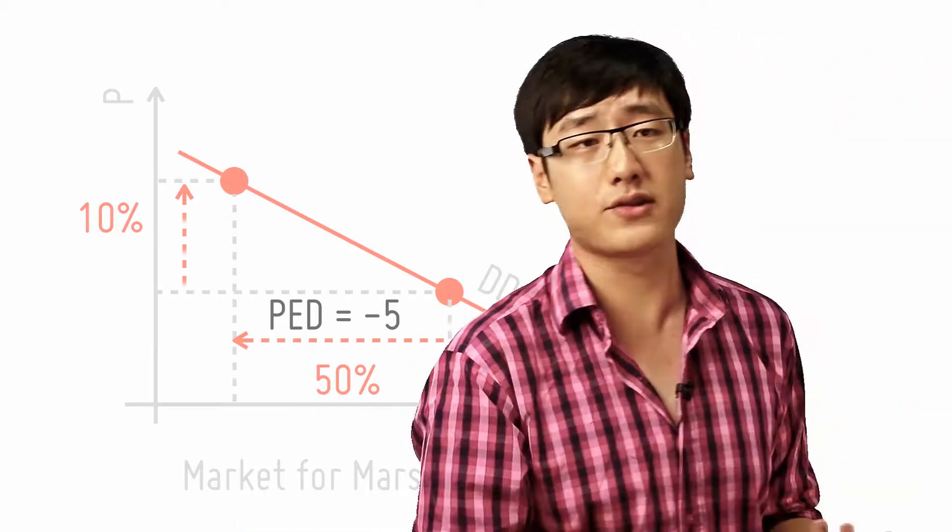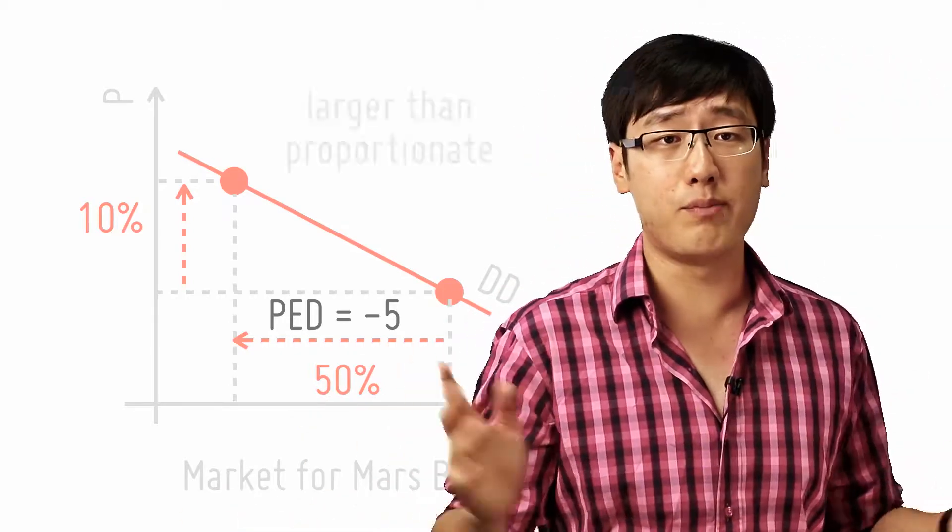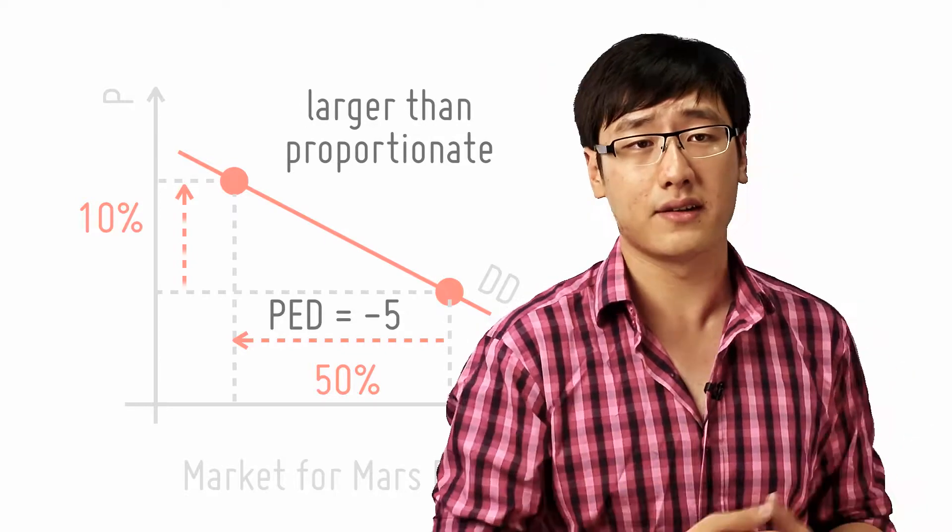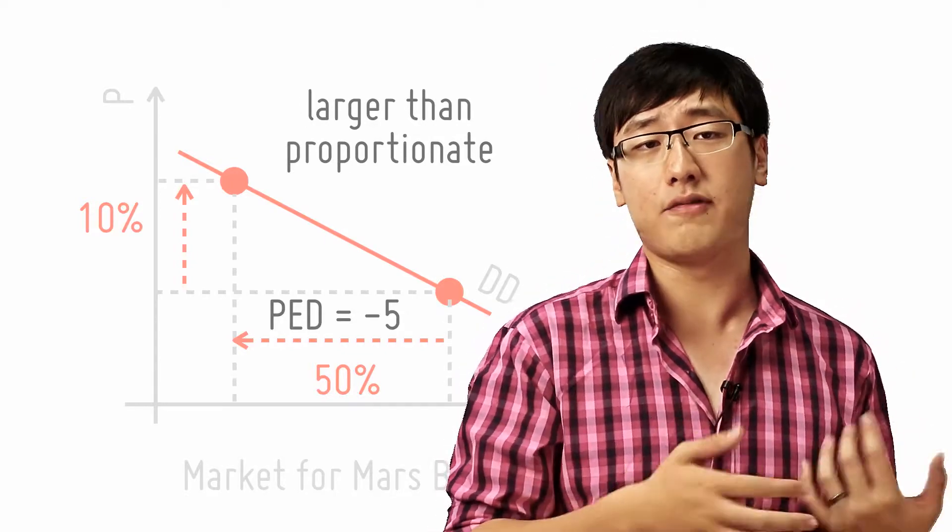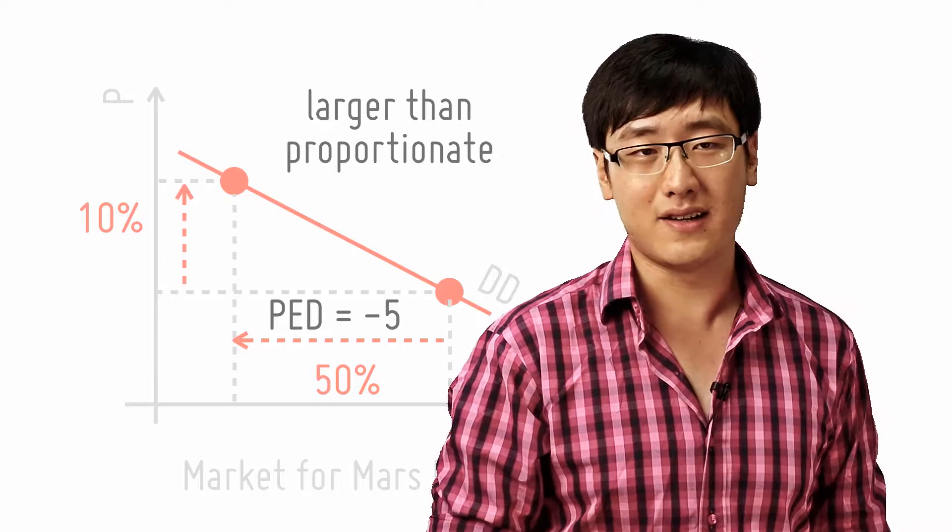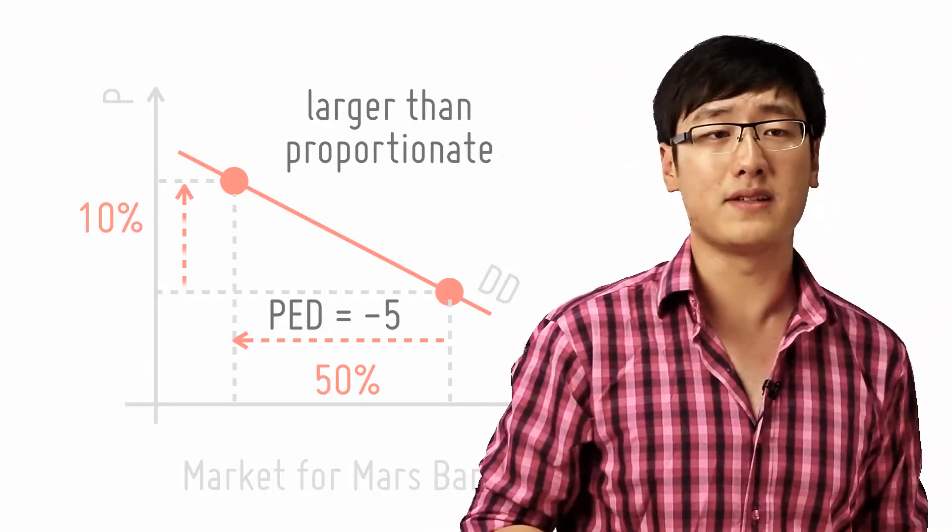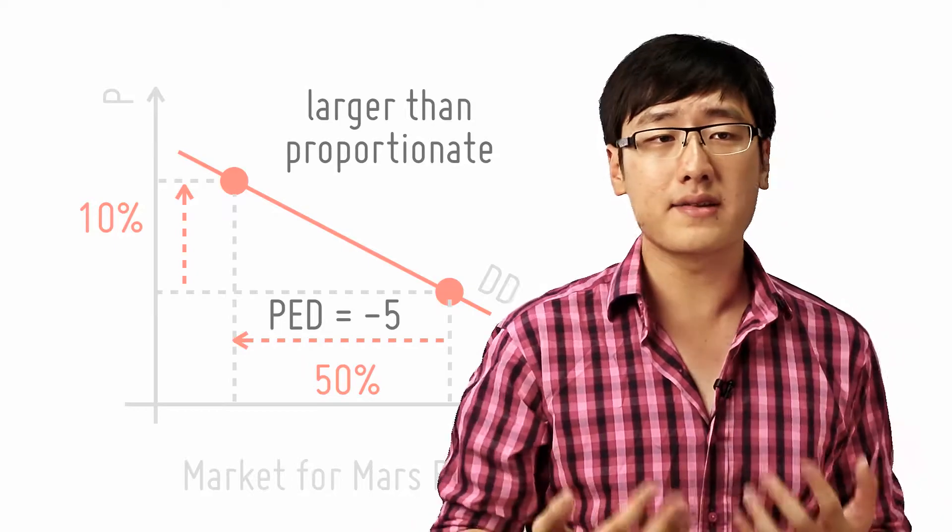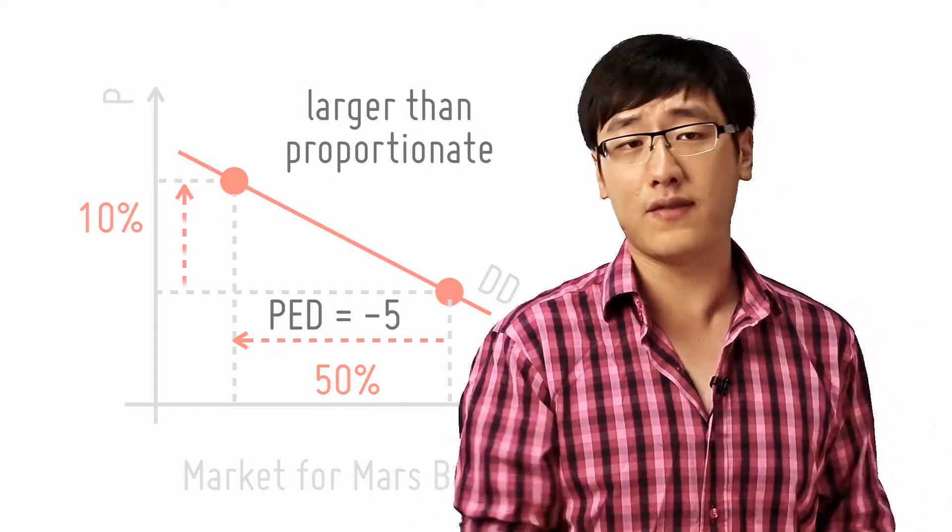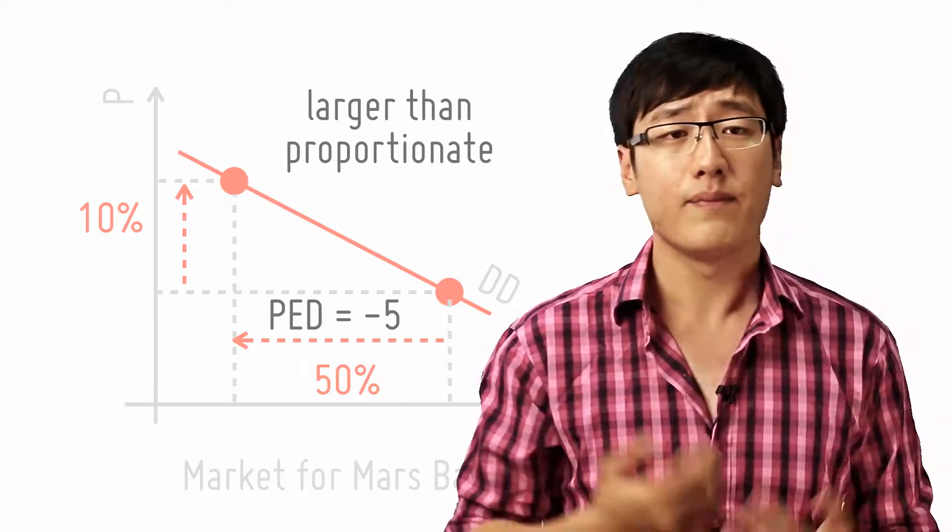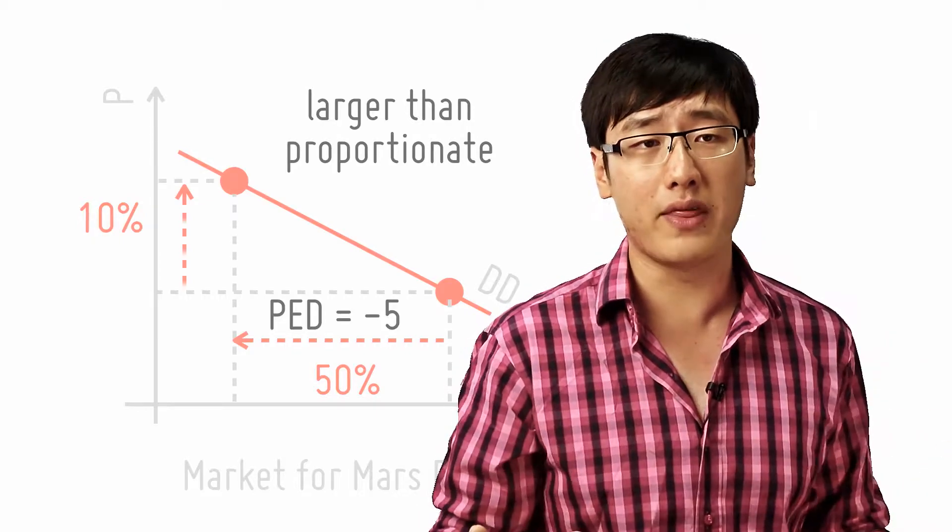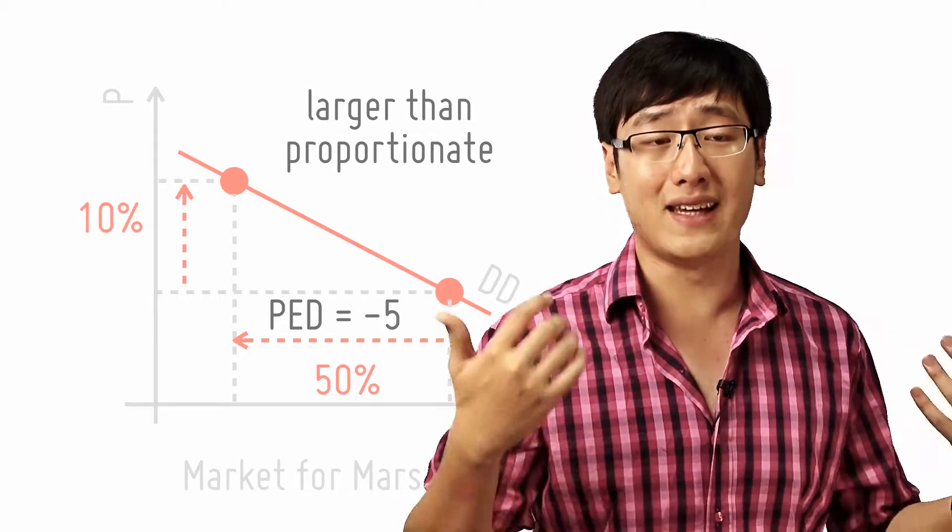Elastic is when a change in price causes a larger than proportional change in quantity demanded. For example, if I have a PED of 5 for Mars bars, this simply means that when the price increases by 10%, quantity demanded decreases by 50%. Now this is a larger than proportionate change. 50% is larger than 10%. This happens when a PED is more than 1, or what we call a price elastic demand.